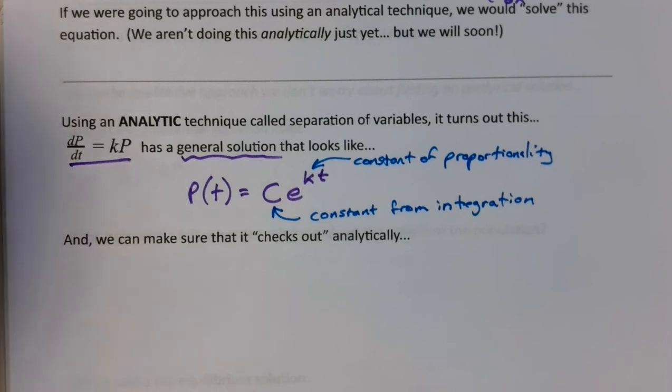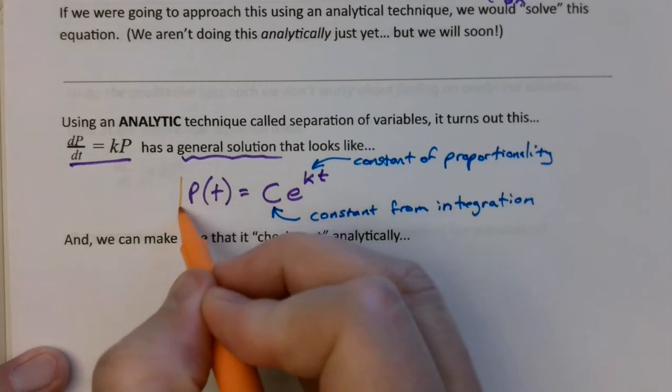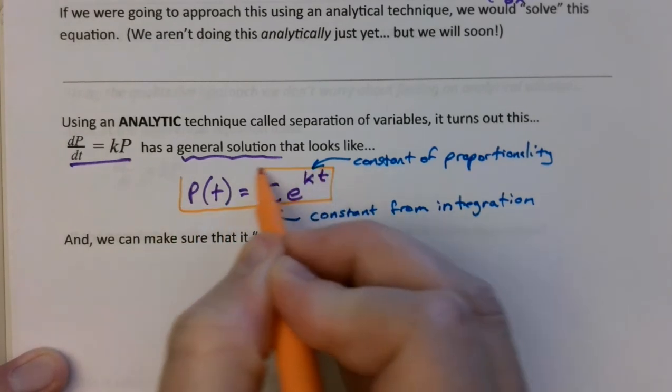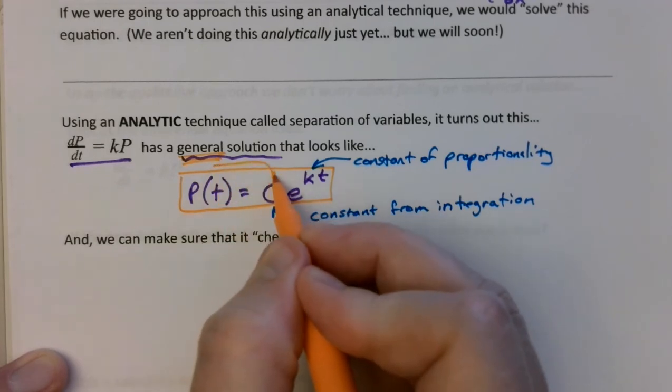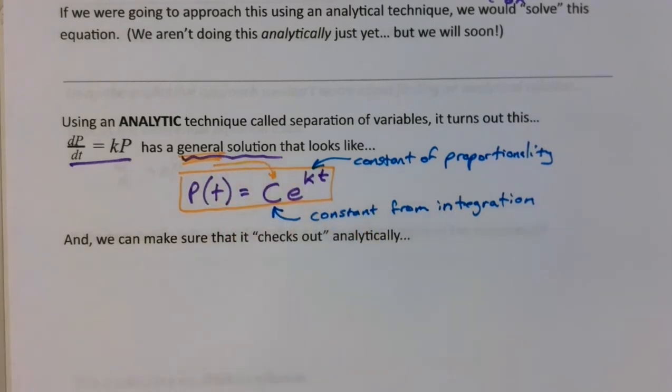So this thing right here is what we call a general solution. This thing right here is a general solution, and it's a general solution because of that constant right there, the constant from integration.